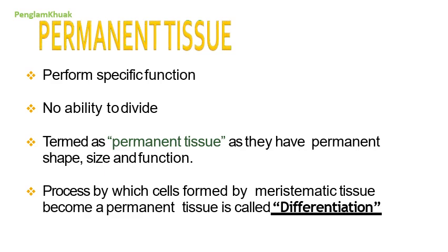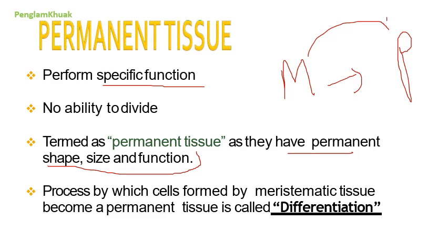Permanent tissue performs one specific function, and once they reach maturity they will not be able to divide anymore. The term permanent tissue was given because they have permanent shape, size, and function. The process by which meristematic tissue becomes permanent tissue is called differentiation.